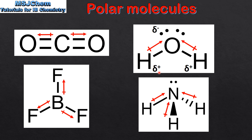The hydrogen atoms have a positive dipole and the oxygen atom has a negative dipole. NH3 is also a polar molecule due to the presence of polar bonds and its molecular geometry. Because of these factors the bond polarities do not cancel out and the molecule has a net dipole moment. The hydrogen atoms have a positive dipole and the nitrogen atom has a negative dipole.